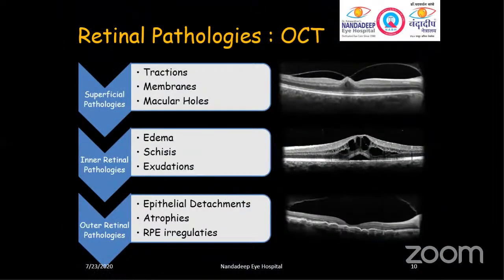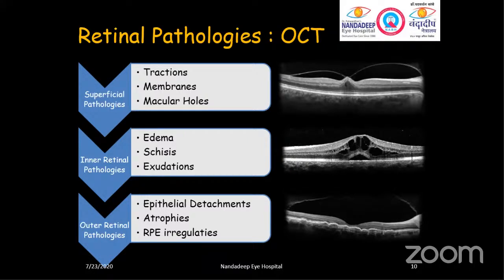Let's see what are the different pathologies where OCT is indicated. Broadly, we divide the retina into three parts: the superficial part, the inner (deep) retinal part, and the outer retinal part. In the superficial pathology, it may have tractions, membranes, or macular holes. In the deep retinal layers, you may have macular edema, retinoschisis (separation of layers), or exudative changes. In the outer retinal areas, you may have epithelial detachments, atrophies, or RP-related disorders.